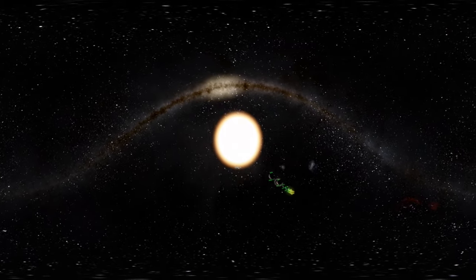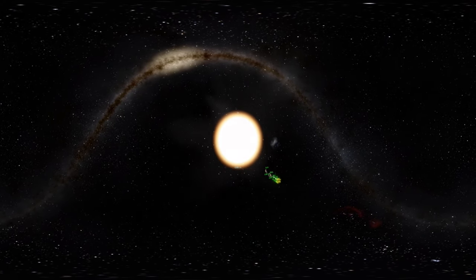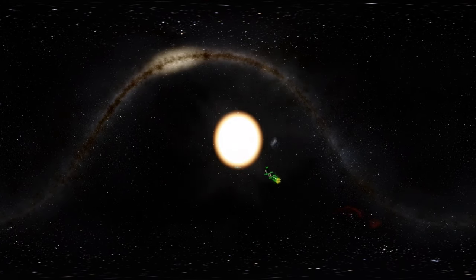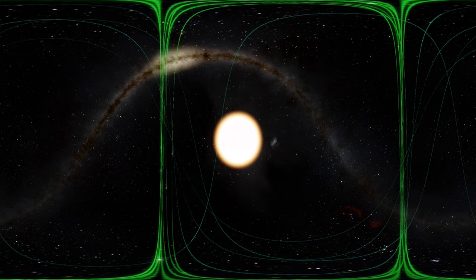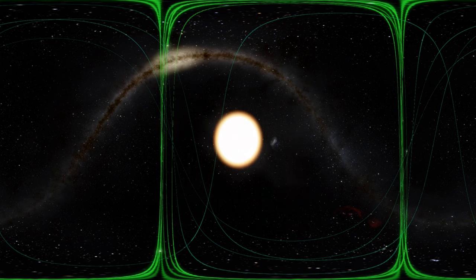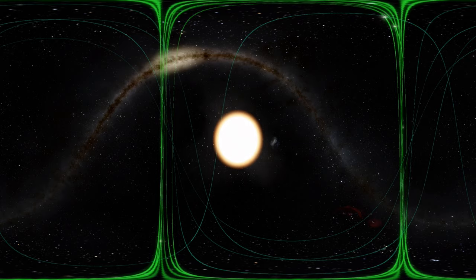Look at our sun and its planets. The planets are staying in orbit around the sun and the outer planets are rotating more slowly. This is due to gravity.